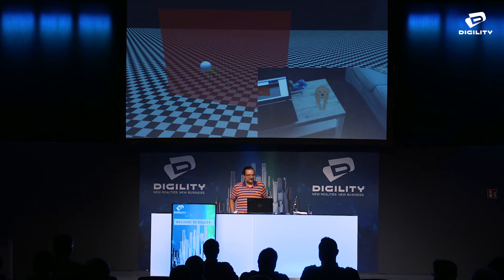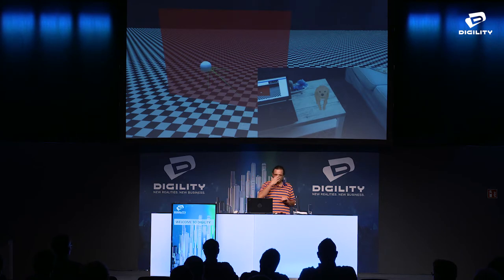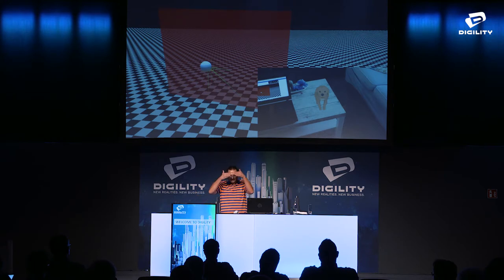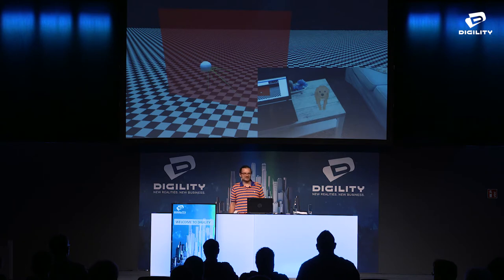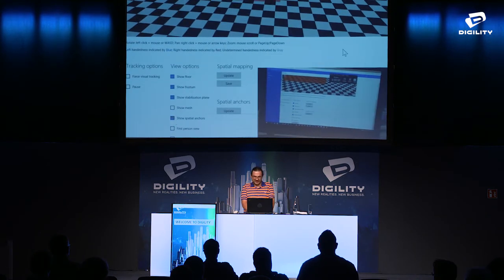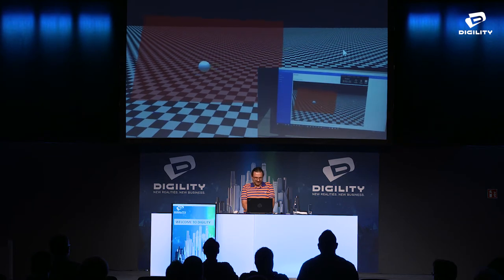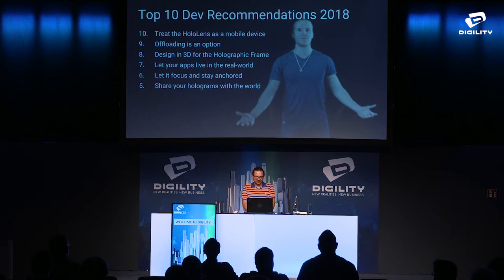World anchors assign a coordinate system to a 3D object so it maintains its real-world position. Even if you leave the room, the device loses tracking, and you return — when tracking recovers, the device adjusts for drift and your virtual object appears at the same real-world position where you placed it. You can also persist and save spatial anchors. There's a spatial anchor gizmo in the device portal to debug anchor placement — useful since anchors are invisible at runtime.